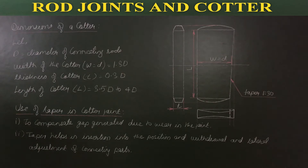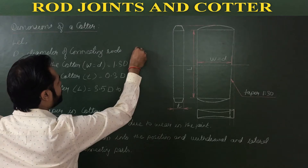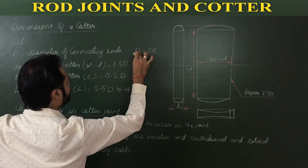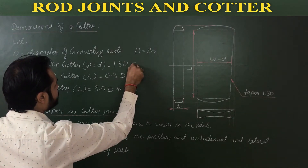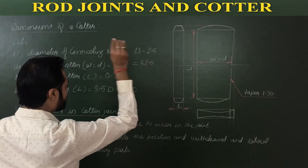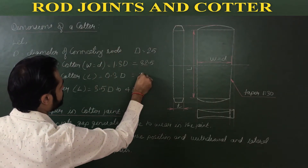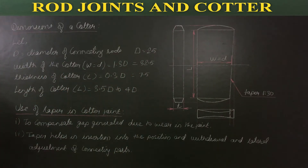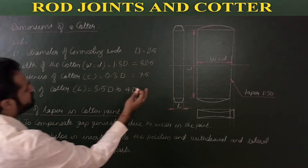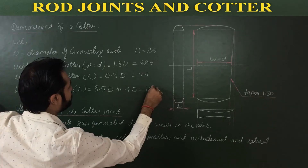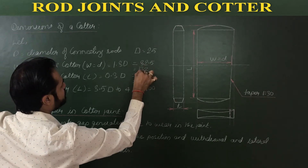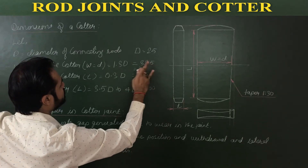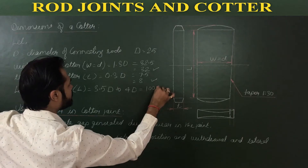Let us assume a value of D and calculate different dimensions of the cotter. For example, if capital D, the diameter of the rod, is 25 mm, then the mean width of the cotter is 1.3 × 25 = 32.5 mm. Thickness is 0.3D ≈ 7.5 mm. Length is 4D = 100 mm. For construction we round these to: width = 32, thickness = 8, and length = 100.